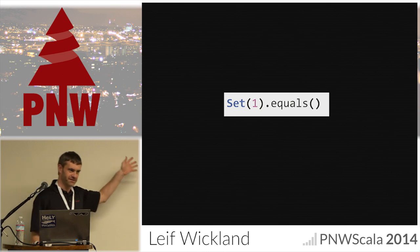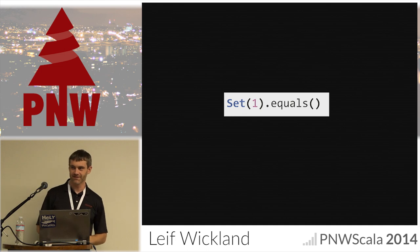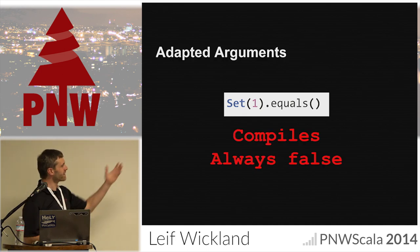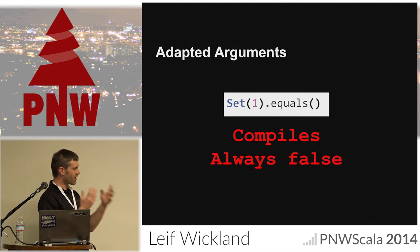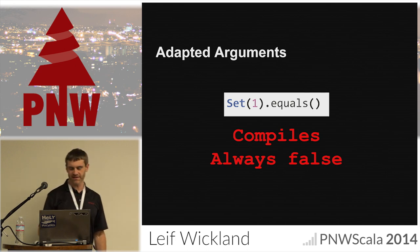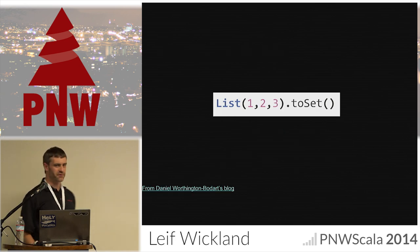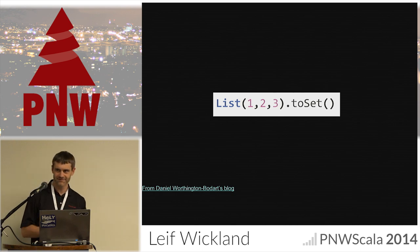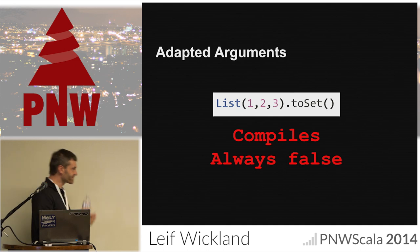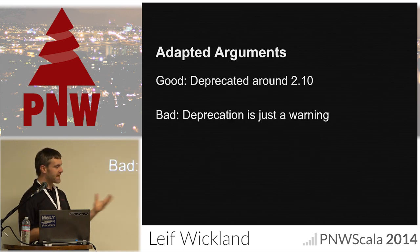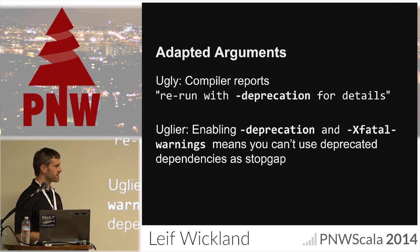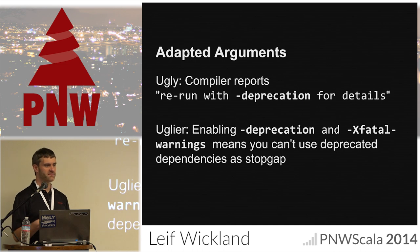Does this code compile? What does it return? False. What happens is the compiler infers that those last parentheses are Unit, they're being passed to equals, and no, the set is never equal to Unit. Same problem with calling apply with Unit — the set never includes Unit. These are called adapted arguments. It was deprecated, but deprecation is just a warning, so you can merrily ship this. If you depend on libraries that have deprecated things, it's not the best situation to be in.